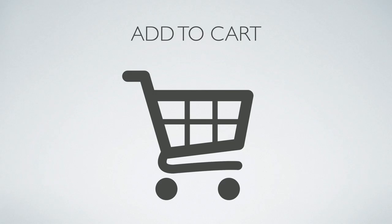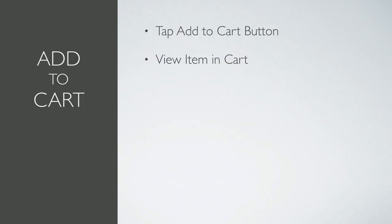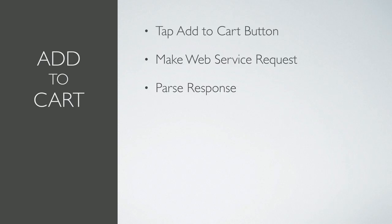I do quite a bit of work in the retail space, so my examples often tend to be commerce-related. Let's suppose that we're working on a catalog app and QA has reported a new defect — items can no longer be added to the cart. It seems simple, right? We tap the Add to Cart button and then we see the items in the cart. But there's a lot more going on here. Where along the way can things go wrong? Well, pretty much anywhere.